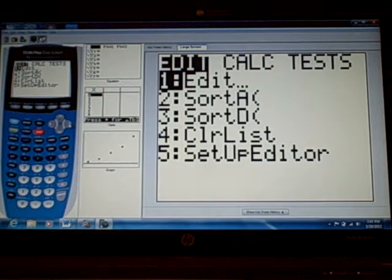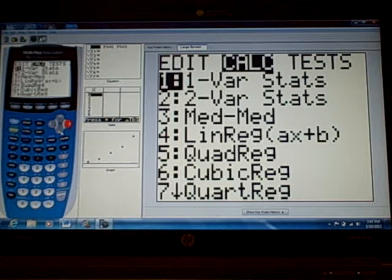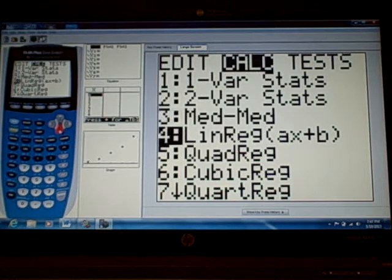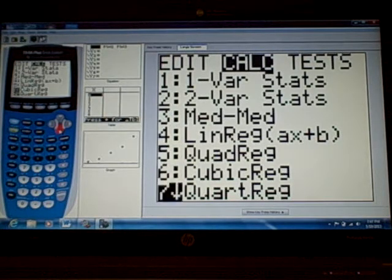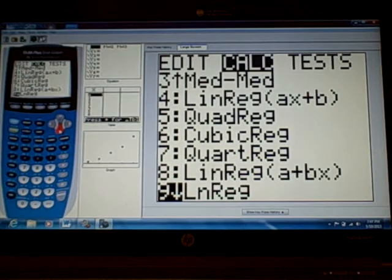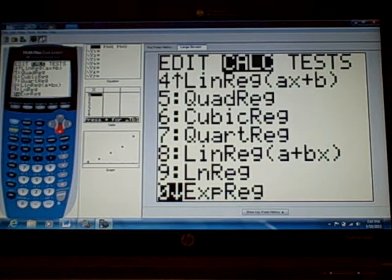We're going to do something a little different than we've done in the past so follow closely. Press stat, go over to calc. We're going to go down to the exponential regression. I think it's number zero. There it is and we're going to press enter.